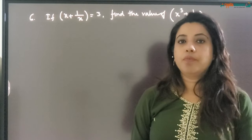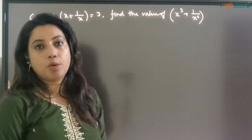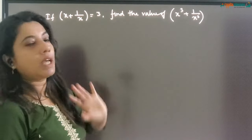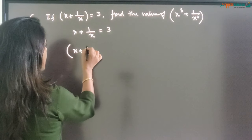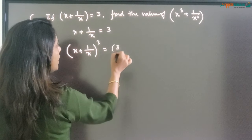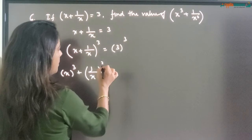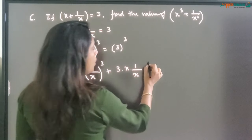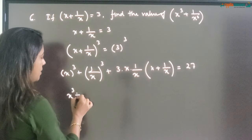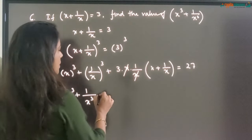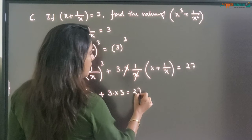Question number 6 is a little different. We have X plus 1 upon X is 3, and we have to find out X cube plus 1 upon X cube. Again here A plus B is given and we have to find out A cube plus B cube. We start from X plus 1 upon X equals 3 and cube both sides, so X plus 1 upon X whole cube equals 3 the whole cube. Expanding: A cube plus B cube plus 3 into A into B whole into A plus B equals 27. So X cube plus 1 upon X cube plus 3 into X plus 1 upon X equals 27, and we put X plus 1 upon X equals 3, giving 3 into 3 equals 9.